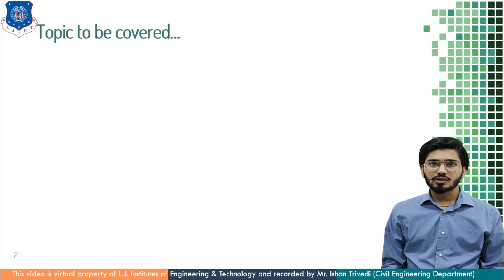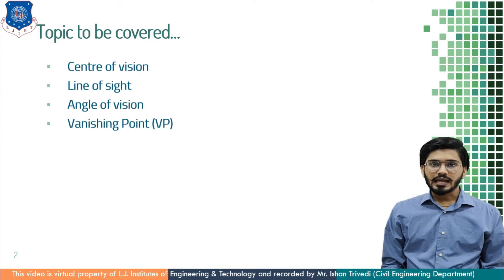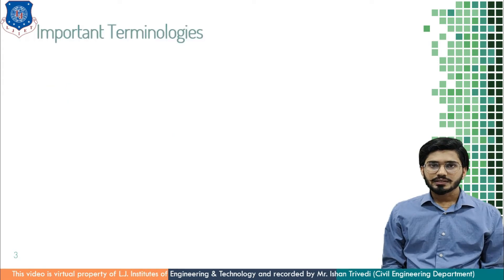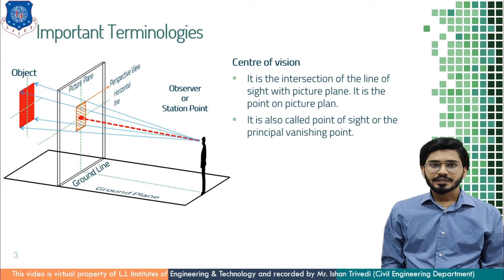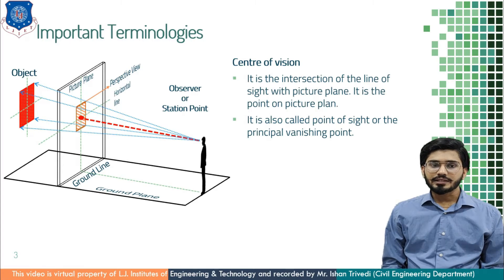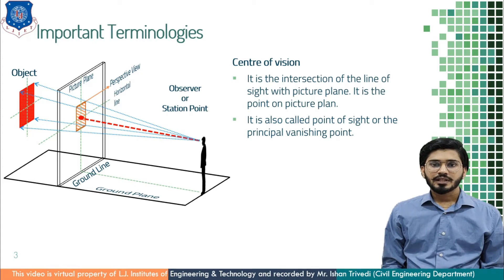Topics to be covered are center of vision, line of sight, angle of vision, and the very important vanishing point. Let us start with center of vision. It is the intersection of the line of sight with the picture plane. You can see here the red line passing from the observer and meeting the picture plane — the point where the line of sight and picture plane merge is called center of vision. It is the point on the picture plane, also called point of sight or principal vanishing point.